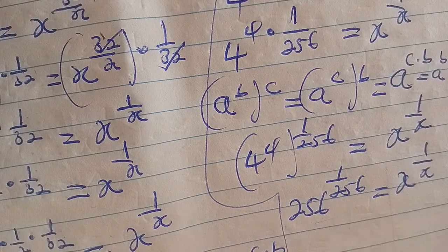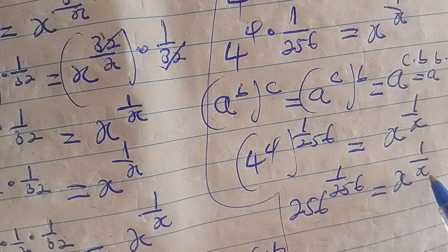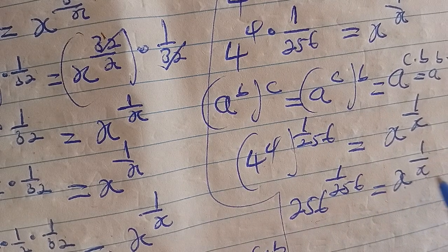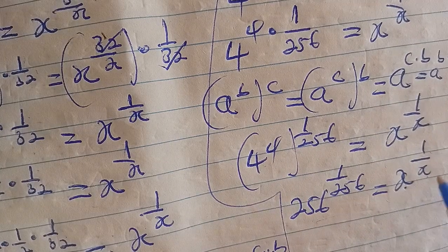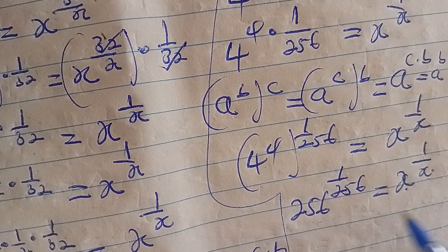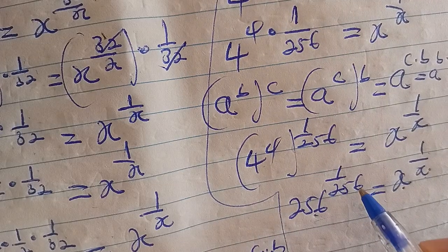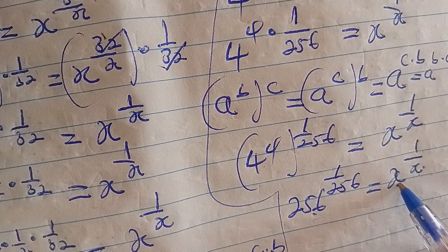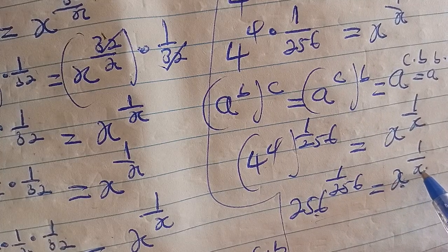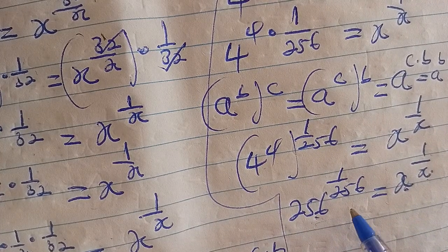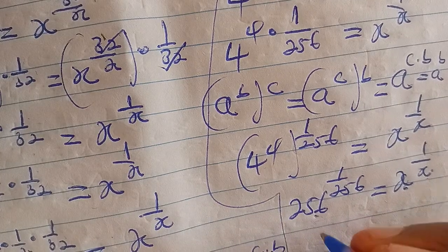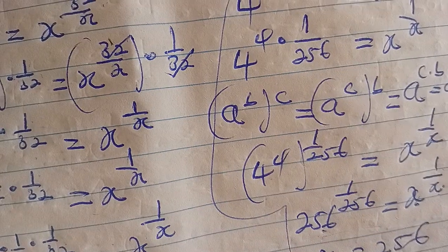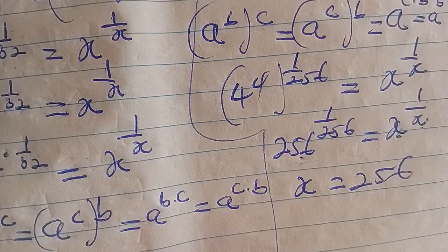Now here we are going to compare both sides of the equation. You can see this is x exponent 1 over x. The number here is the same as the number here, and here is x and here is x, so it means the unknown number here is the same as the unknown number here. Therefore we can see that x is equal to 256.